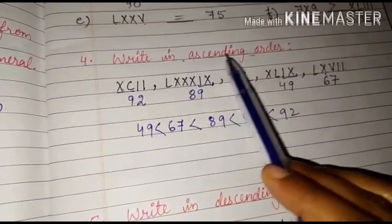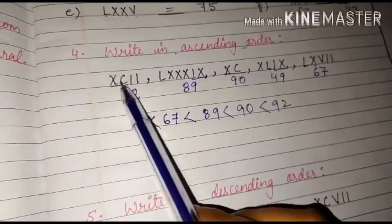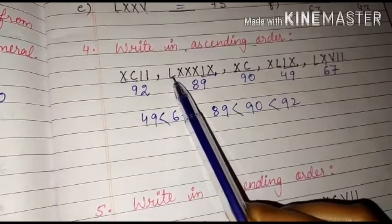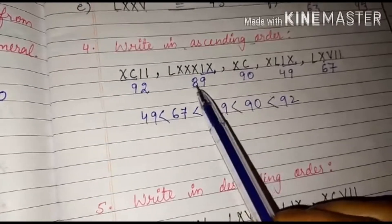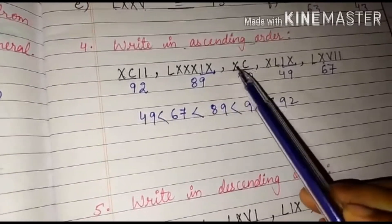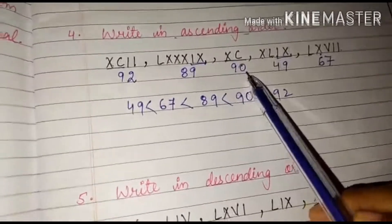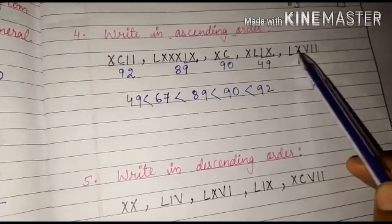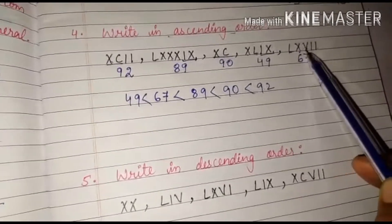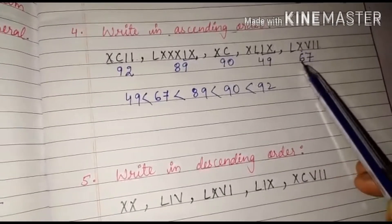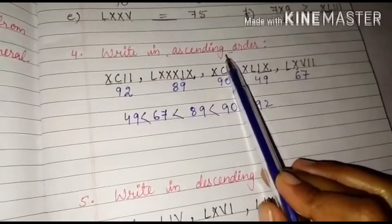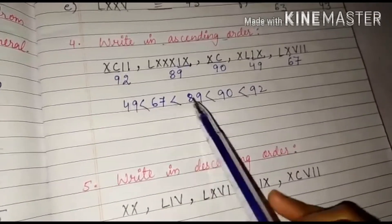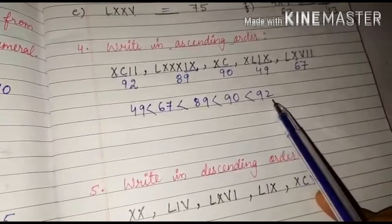Next question is writing in ascending order. So XCII is 92. LXXIX that is 50, 60, 70, 80, and IX is 9 so 89. XC. We are subtracting X from C. So that is 90. XLIX is 40, IX is 9 so 49. LXVI is 50, 60, 66. LXVII is 7. So it is 67. Ascending means from smallest to greatest. The smallest number is 49 which is less than 67 which is less than 89 which is less than 90 which is less than 92.